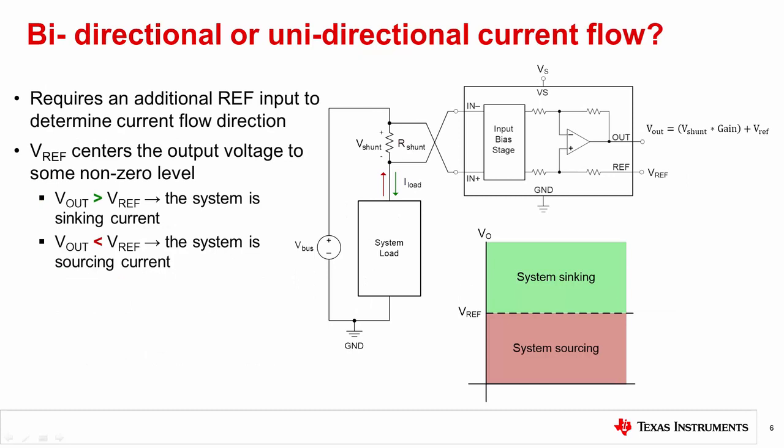Next, we will look at the concept of current flow directionality. In many applications the current may flow in both directions. One simple example is a battery charging or discharging. In order to determine which direction the current is flowing, the current sense amplifier must have an additional reference input pin that can be used to set the zero current output voltage to some non-zero level.